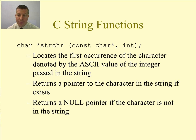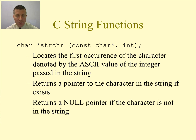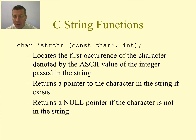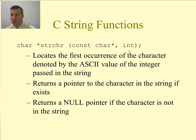The first one we have is strchr, and what this function does is locate the first occurrence of the character denoted by the ASCII value of the integer passed in the string. We pass in a string — that first parameter is const, meaning it won't be changed by this function call. The second parameter, even though it says an integer, is actually a character being passed in. We pass it as an ASCII value with single quotation marks around the character, and it'll convert it to the ASCII value for us.